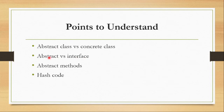Abstract class versus interface: you can inherit only one abstract class at a time, but with an interface you can inherit multiple interfaces. For interface you use the implements keyword, whereas for abstract class you use the extends keyword. We'll go through more differences in upcoming videos, along with abstract methods and what hashcode is.